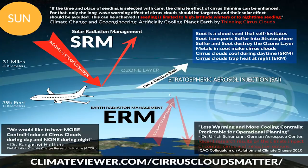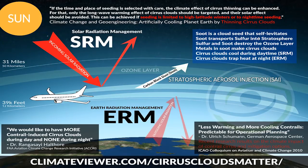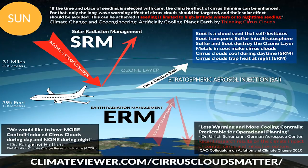Many of you are probably scratching your head going, how the hell would you do that? They have now come up with several different methods, one of which is called thinning cirrus clouds or cirrus cloud seeding. Ken Caldeira and company wrote a paper called 'Climate Change and Geoengineering: Artificially Cooling Planet Earth by Thinning Cirrus Clouds,' dubbed the Cocktail Geoengineering paper. They said: 'If the time and place of seeding is selected with care, the climate effect of cirrus thinning can be enhanced. Only the long-wave warming effect of cirrus clouds should be targeted, and their solar effect should be avoided. This can be achieved if seeding is limited to high-latitude winters or to nighttime seeding.'